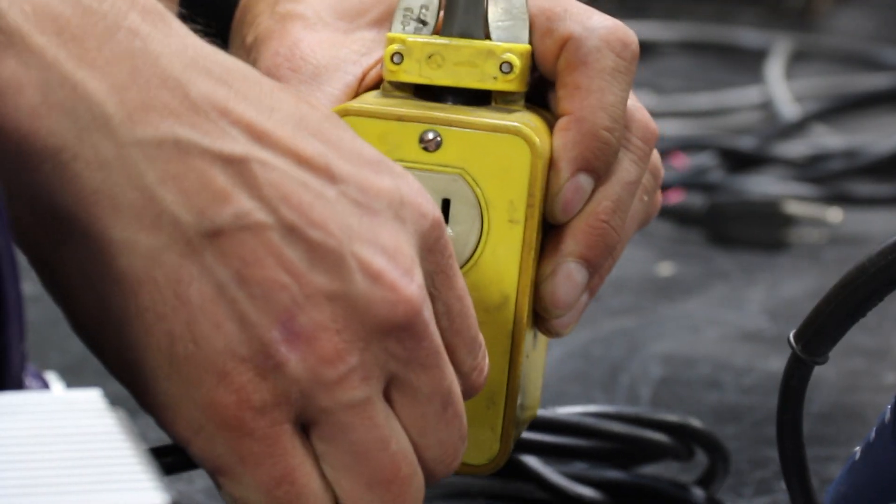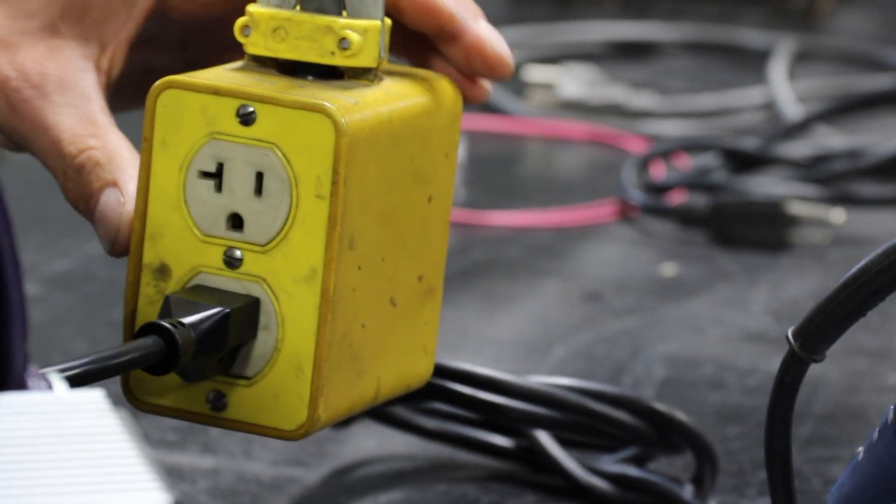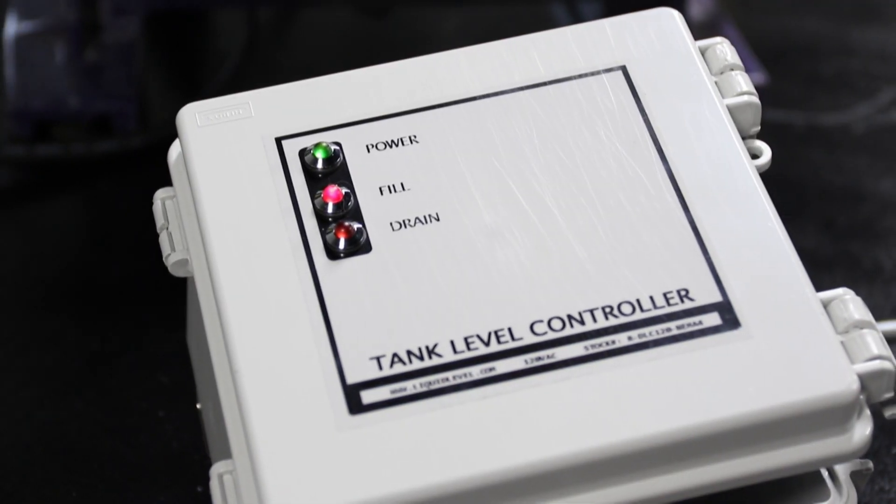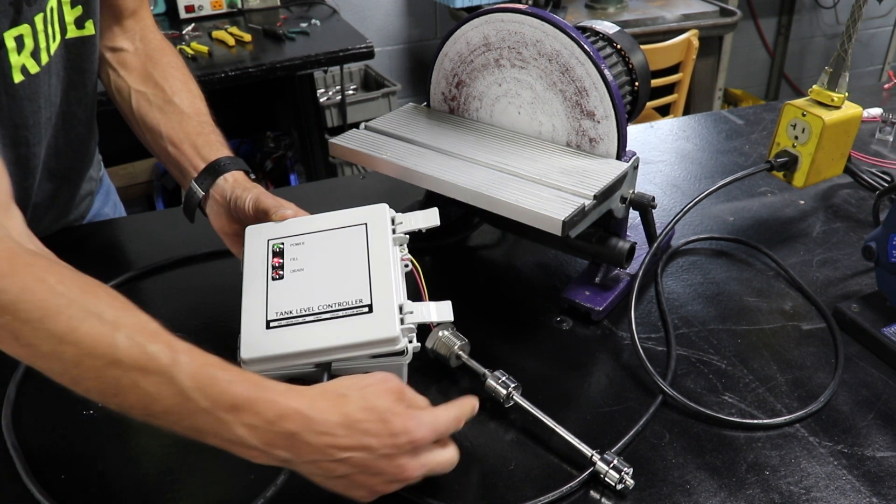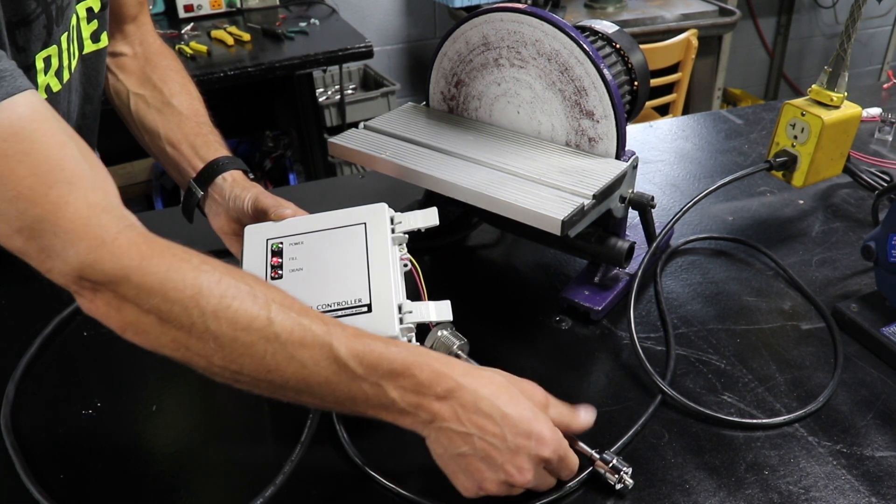Let's plug in the tank level control relay to see how this setup works. Power is indicated by the green LED seen here and the fill light is on because these two floats are in the down position indicating our tank is empty and would begin filling up.